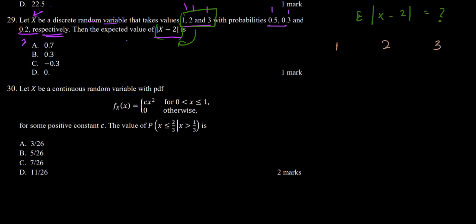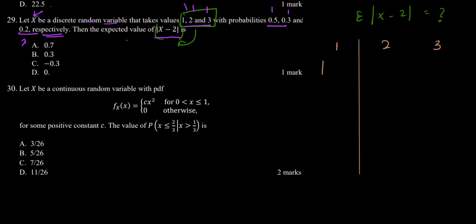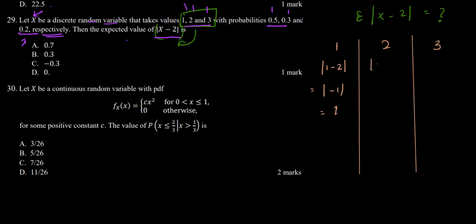In the first case, |1 − 2| = |−1| = 1. In the second case, |2 − 2| = |0| = 0. In the third case, |3 − 2| = 1. So the possible values of |X − 2| are 1, 0, and 1.